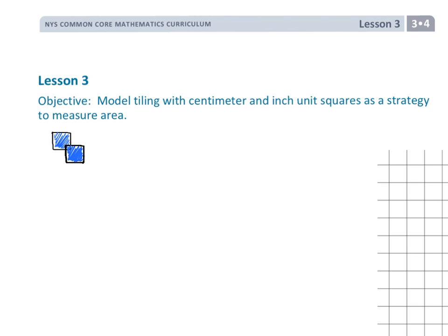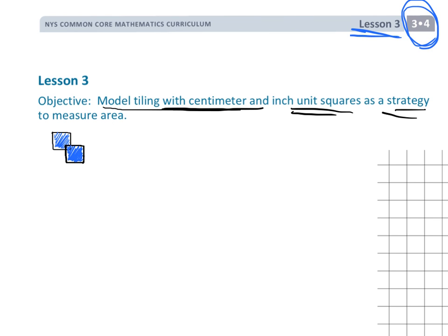This is Grade 3 Module 4 Lesson 3. In this lesson we're going to be modeling tiling with centimeter and inch unit squares as a strategy to measure area. Basically, the idea is we're not going to teach a formula for finding the area of rectangles — instead we're going to use the idea of tiling.